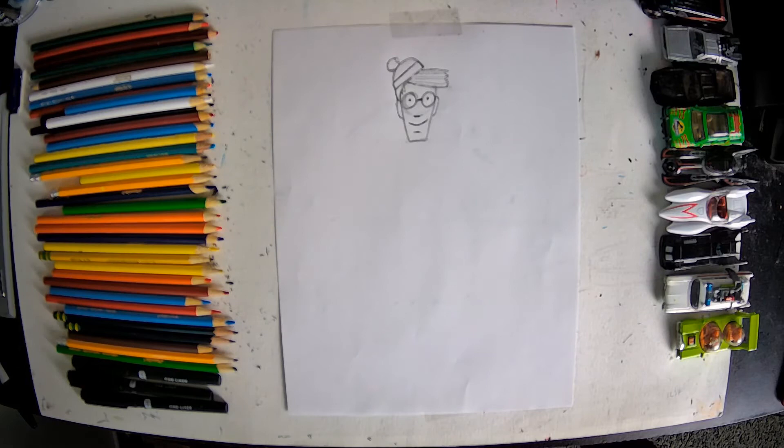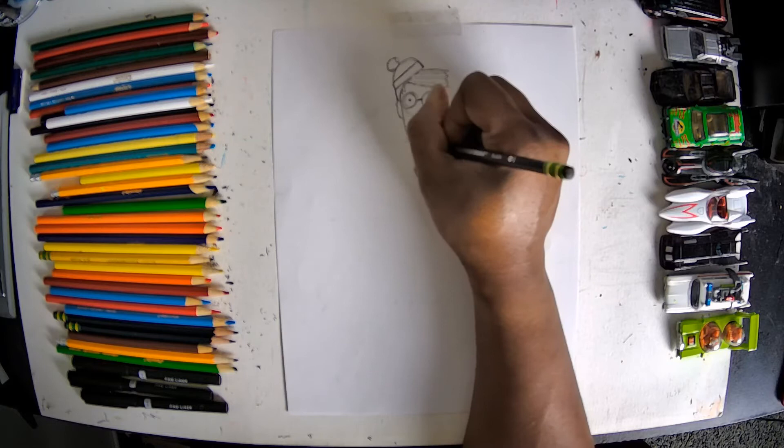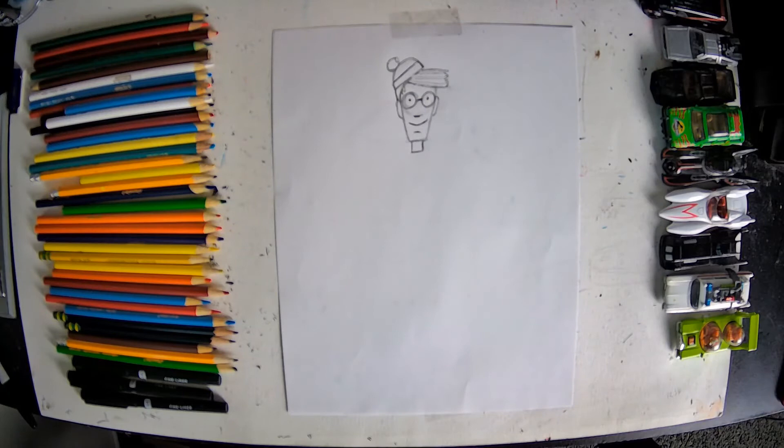So next, it's time to add his body. First, we're gonna create his neck. Coming in a little bit under his chin, so it shouldn't be as thick as his chin, we're gonna make a small square shape.